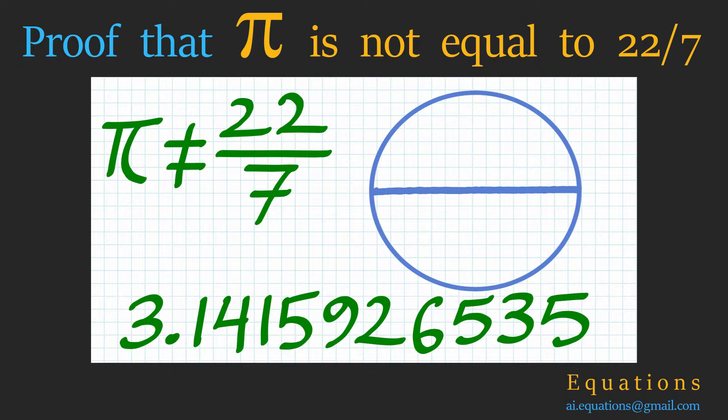Hello and welcome to Equations. In today's video, we will disprove one of the most popular and fundamental myths in mathematics. Most of us watching this video would have used the number pi at least once in our life. Many of us would know the true value of pi, but there are many more among us who grew up believing that pi was equal to 22 by 7. This video is for them.